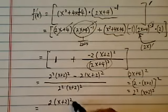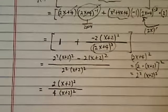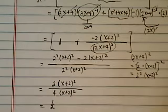And then I have a twice of (x plus 2) squared, and on the bottom I have a 4(x plus 2) squared. And what do you know, we have exactly the same answer, which is 1/2.